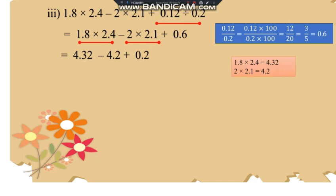Then we will add. For addition what I have done children? I have taken both the terms for adding together. 4.32 plus 0.2 minus 4.2. Now what is the addition of 4.32 plus 0.2? That is 4.52 minus 4.2. Now the answer will be 0.32.